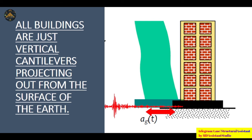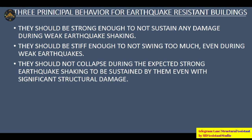A building is like a vertical cantilever projecting out from the surface of the earth. The three principal behaviors for an earthquake-resistant building are: it should be strong enough not to sustain any damage during weak earthquake shaking; it should be stiff enough not to swing too much even during weak earthquakes; and third, it should not collapse during the expected strong earthquake shaking, even with significant structural damage.